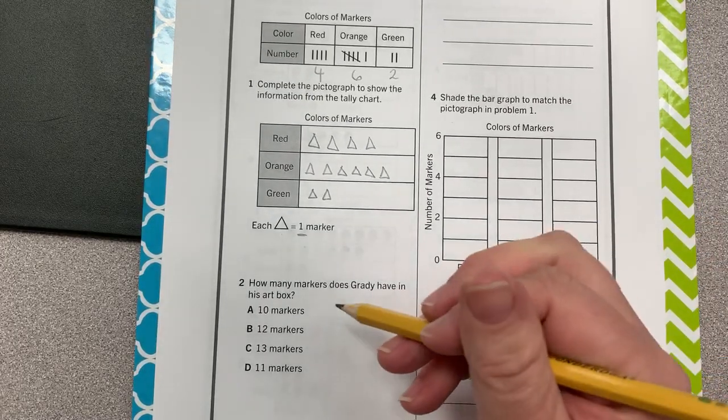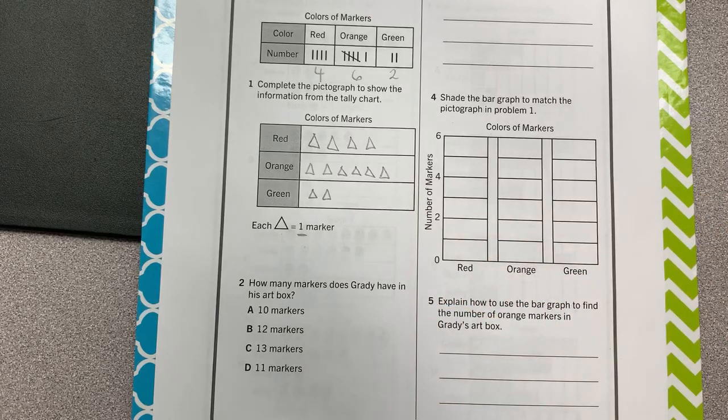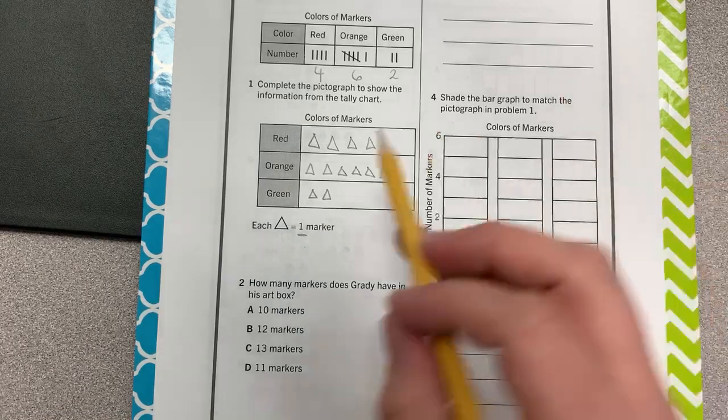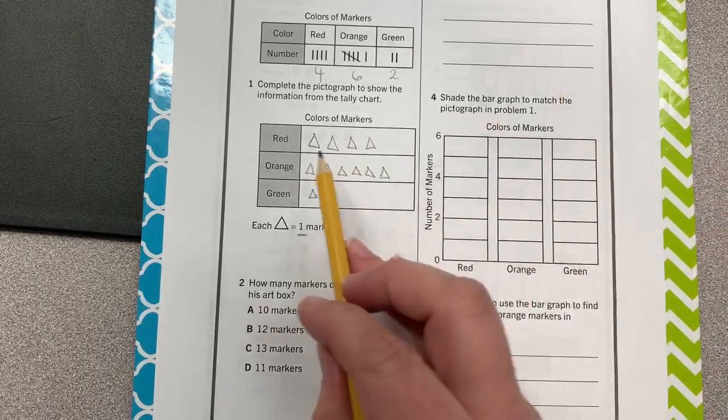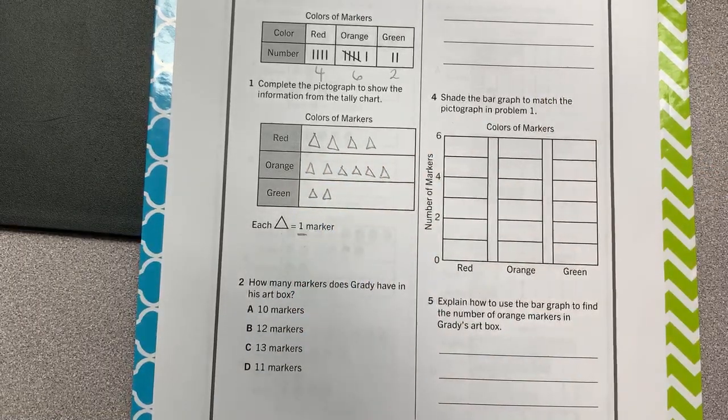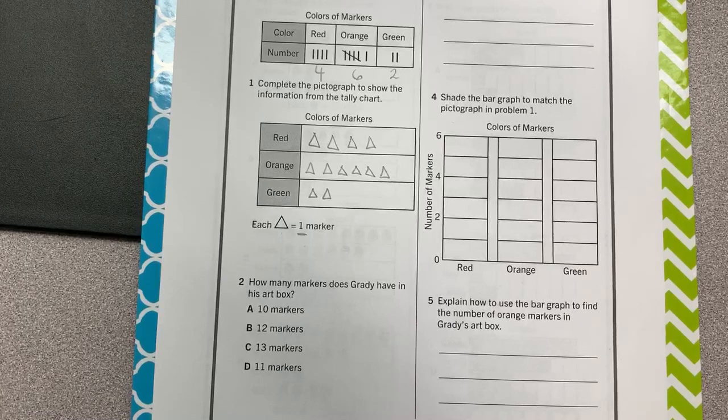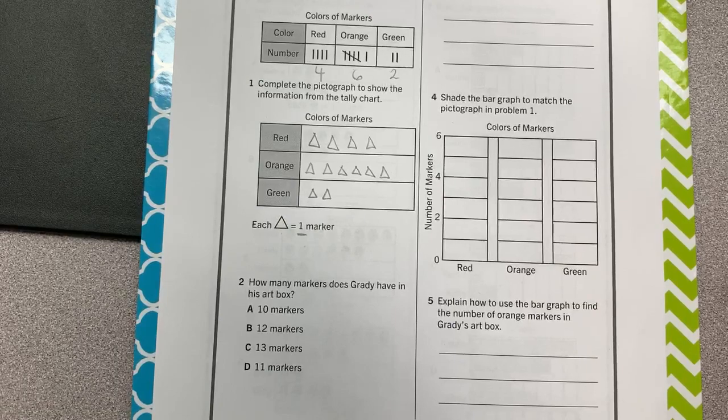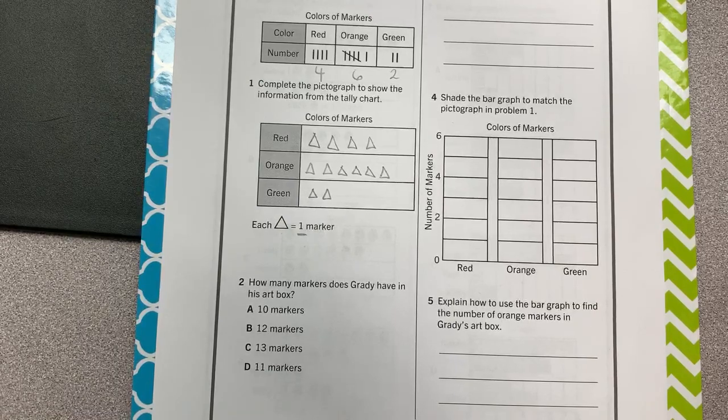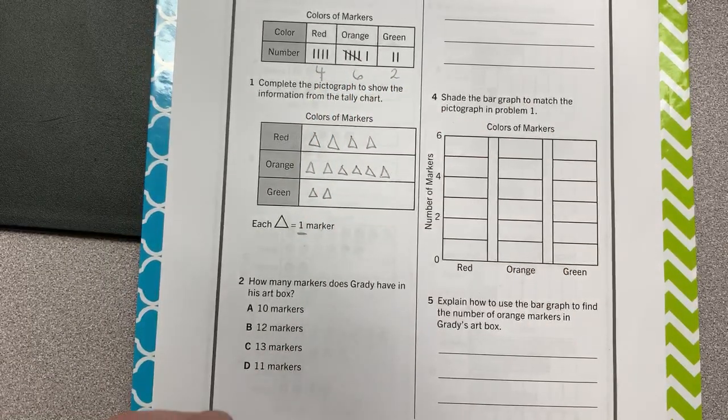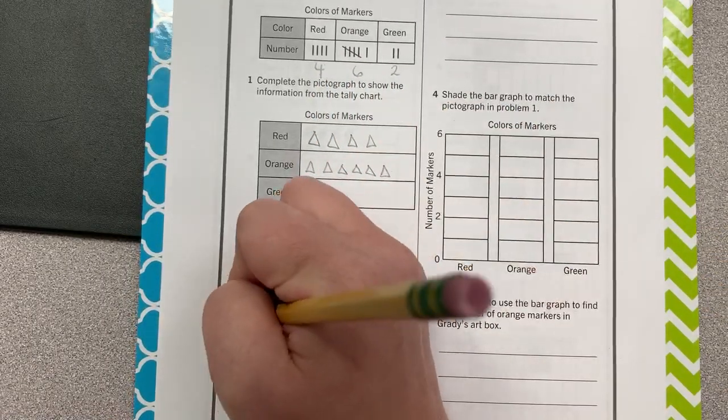How many markers does Grady have in his art box? Well, it doesn't say a certain color, so we're assuming that it means all the markers. So we are counting by ones. One, two, three, four, five, six, seven, eight, nine, ten, eleven, twelve. That took a while. We have been doing addition more than adding together four numbers at a time. We could have just done four and six is ten and two more is twelve. That would have been faster than counting by ones. And I bet some of y'all did that.